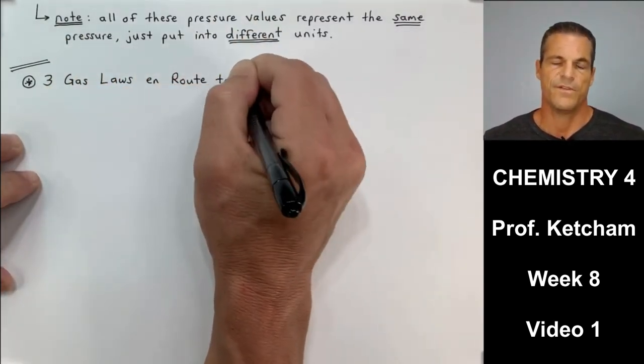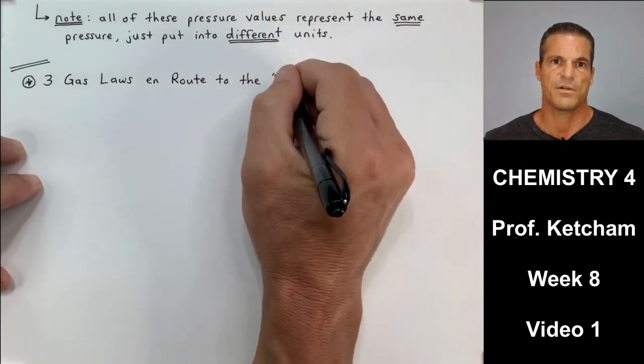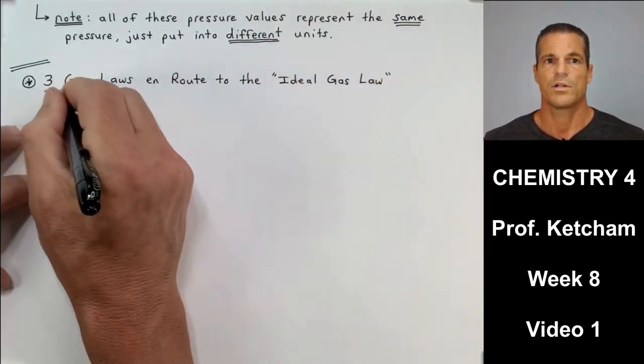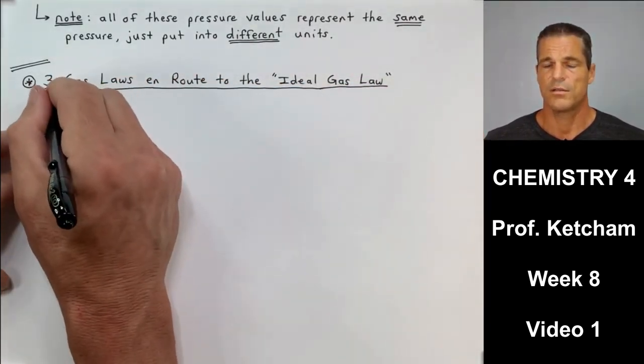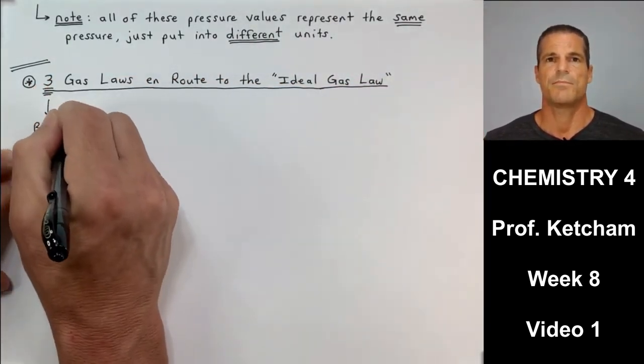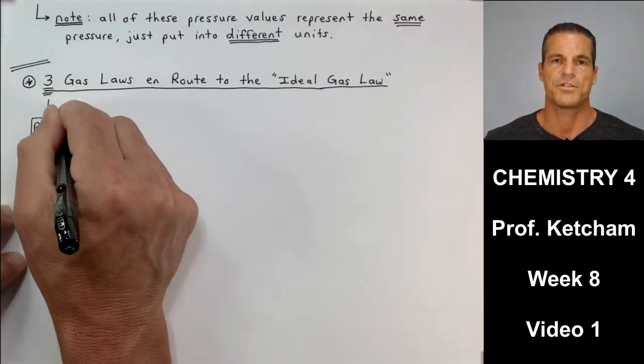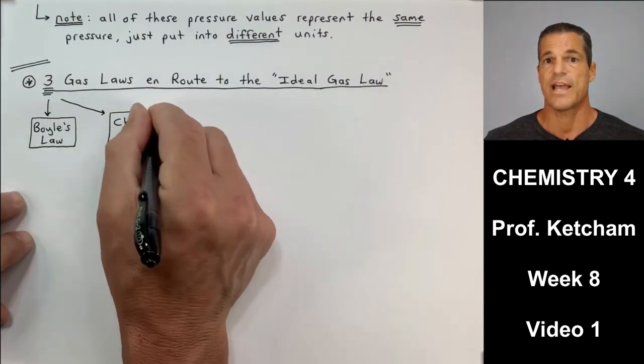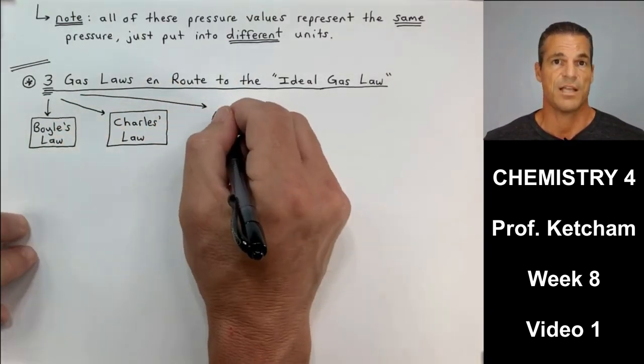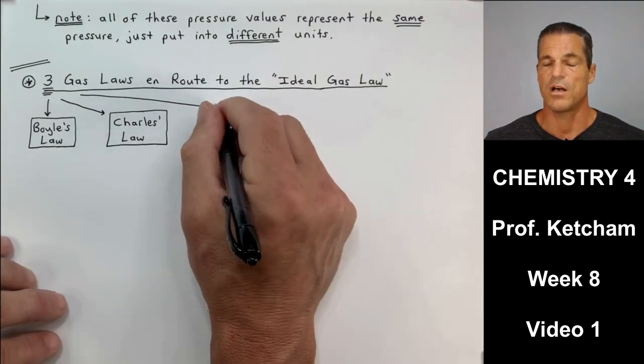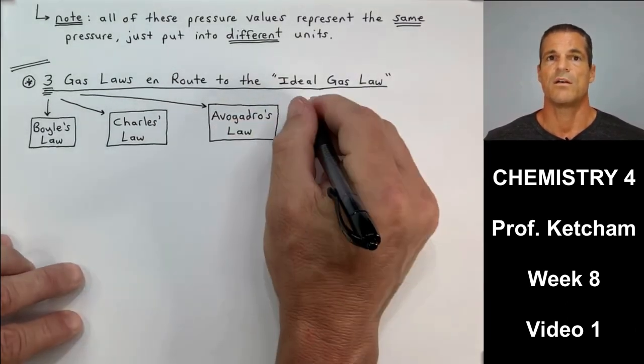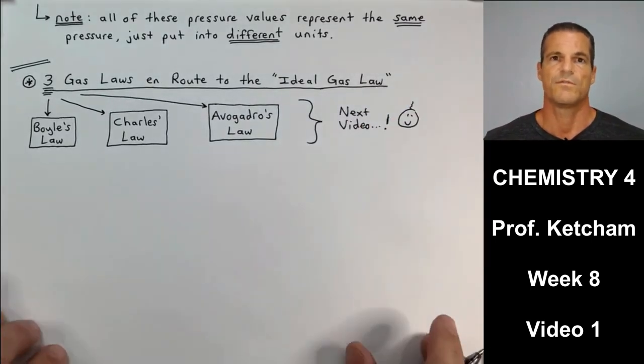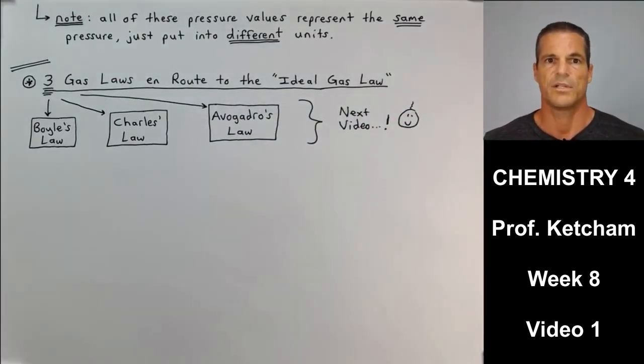All right, now, in our next video, video number two for section five, we're going to talk about three individual gas laws. We're going to talk about something called Boyle's Law, which shows the relationship between pressure, gas pressure, and gas volume. We're going to talk about Charles' Law, which talks about gas volume and gas temperature. And then we're going to talk about Avogadro's Law, which talks about volume and the amount of a substance in the relationship between the two.